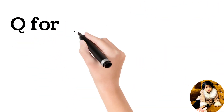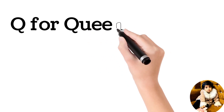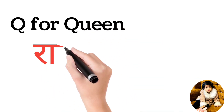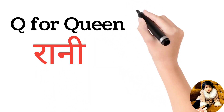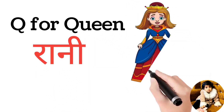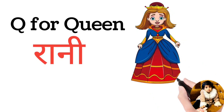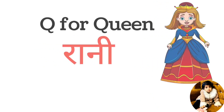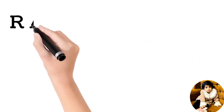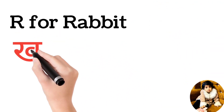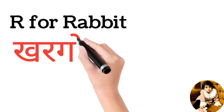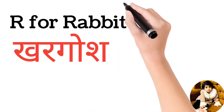Q for queen, queen means raani. R for rabbit, rabbit means khargosh.